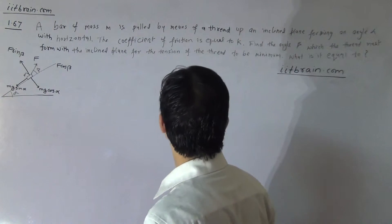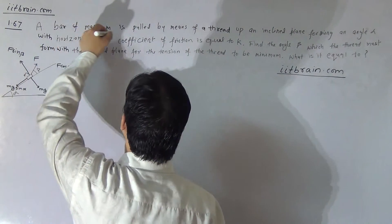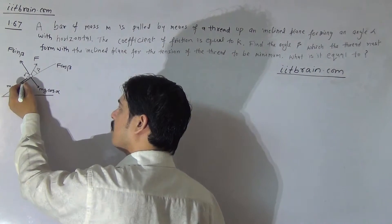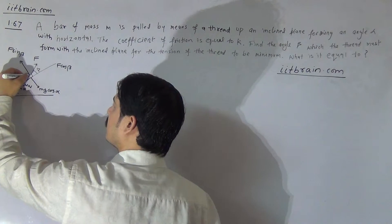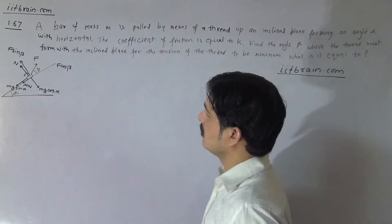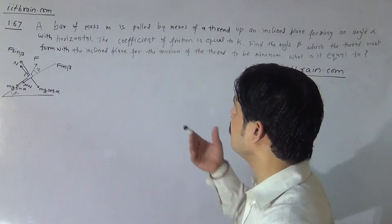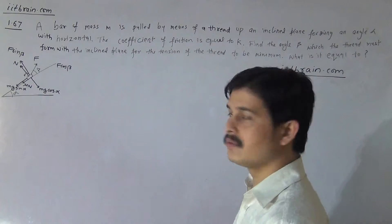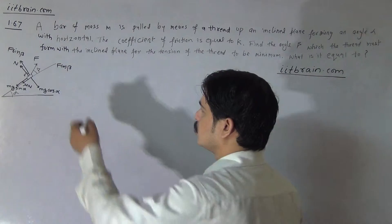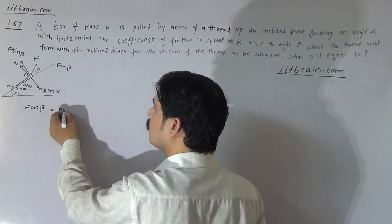The coefficient of friction is k, and since the bar of mass is pulled upward along the incline, friction will definitely act downward. It is mu times the normal reaction N. To get the minimum value of force F, we should move the block upward with zero acceleration.